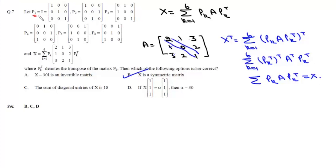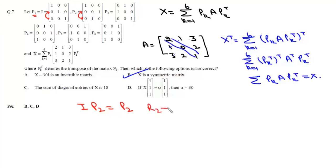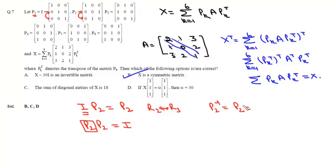Now p1 is I. If we look at p2, it is [1,0,0; 0,0,1; 0,1,0]. If we interchange rows r2 and r3, p2 becomes I, and if we interchange r2 and r3 in I it becomes p2. So p2 inverse equals p2 itself, and p2 is a symmetric matrix.